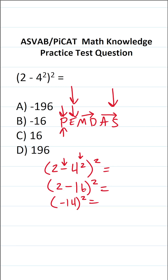This now says negative 14 squared, which is the same thing as negative 14 times negative 14. And here's the real crux of the problem: what is a negative times a negative? A negative times a negative is going to be a positive.